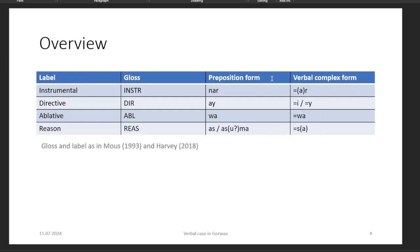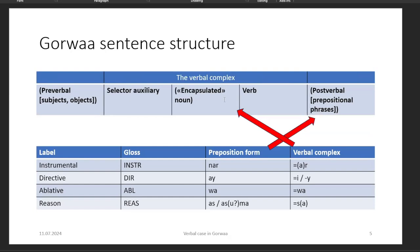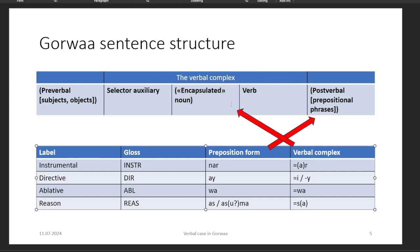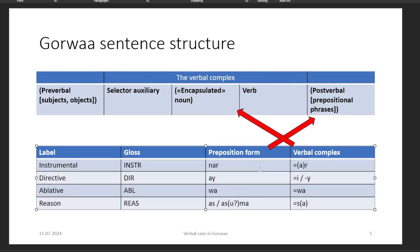There is a connection to the earlier presentation by Titi Lala — we saw wa and nar being used for verbal meanings, and these are the same things. Andrew and Titi Lala think it's ner, but I think it's nar. This is a scheme of the Gorwa sentence: you have the verbal complex in the middle, defined by the selector auxiliary on the left side and the verb on the right side. Arguments can be inside here, and so can the verbal case clitics, in which case they take these internal forms. You can also use the clitics outside the verbal complex, after it, in which case they have preposition forms.